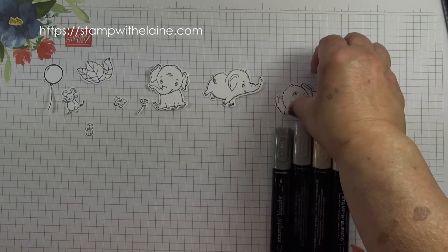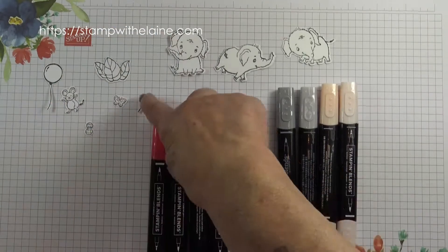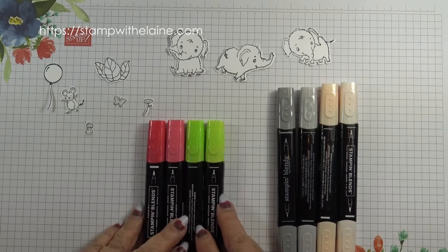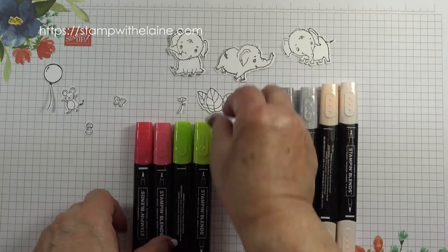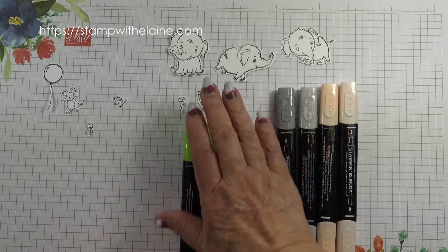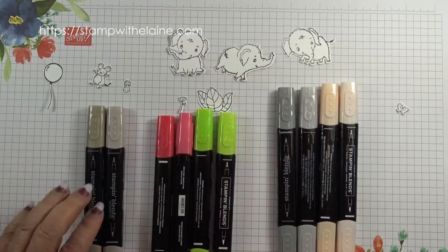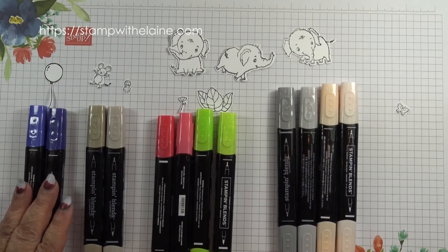These are the blends I used to color the elephants with: smoky slate and petal pink. This little flower here I used sweet sorbet and parakeet party. For the leaves I used parakeet party. For the mouse and the peanut I used crumb cake. And for the balloon I used starry sky.